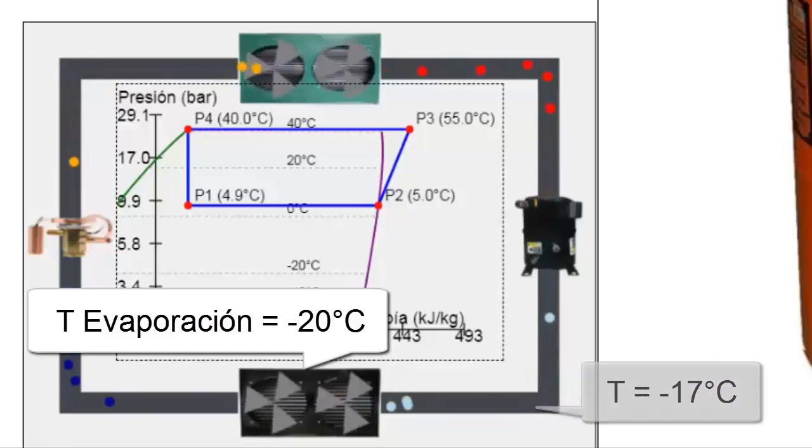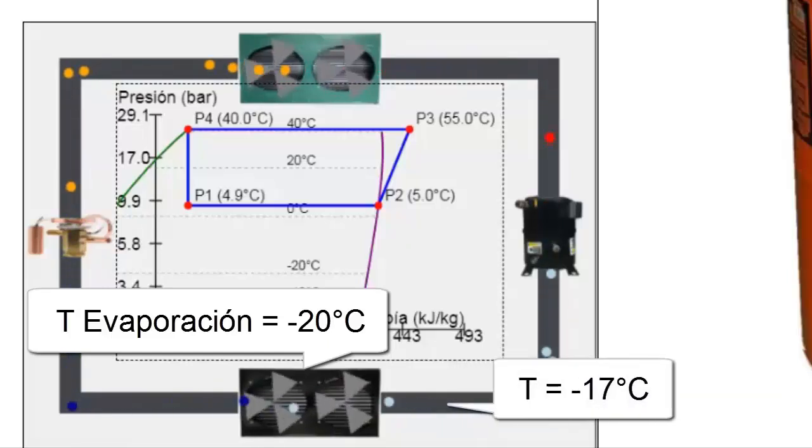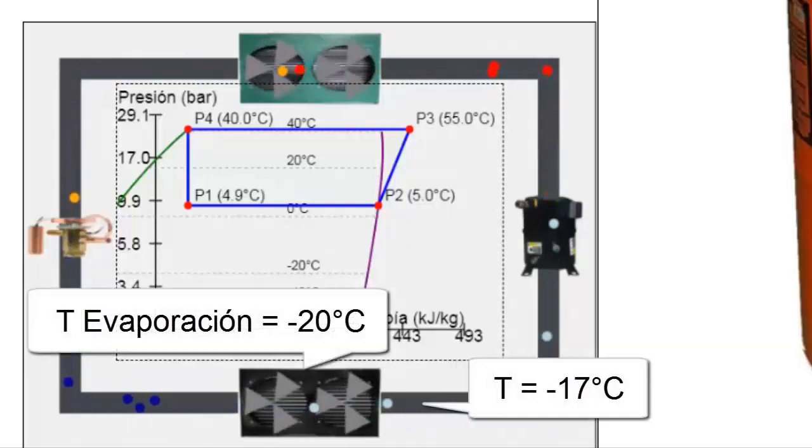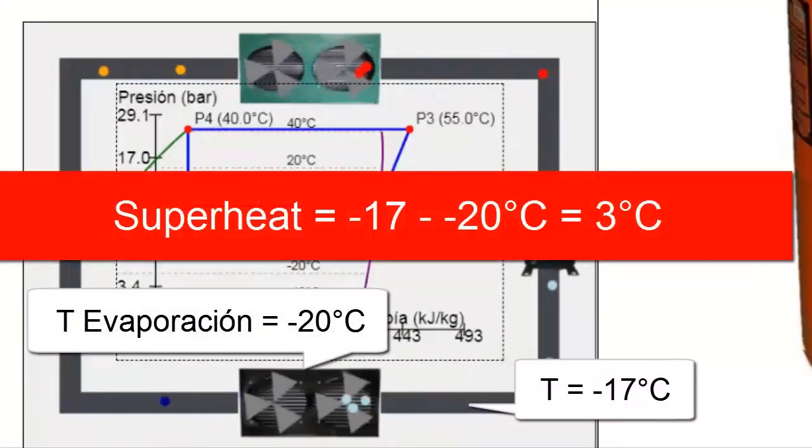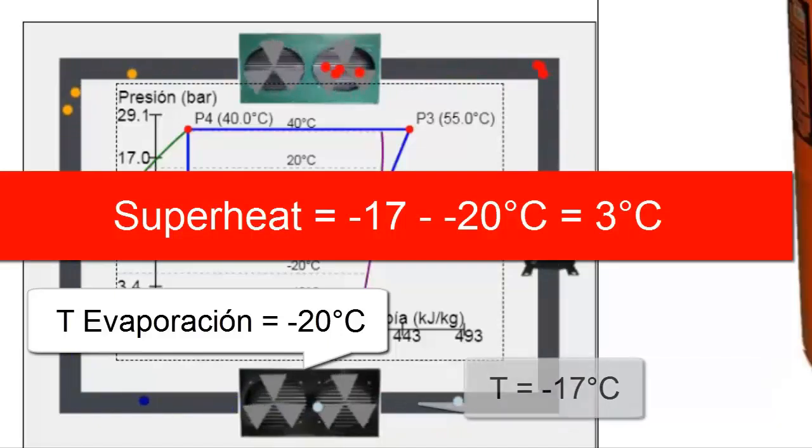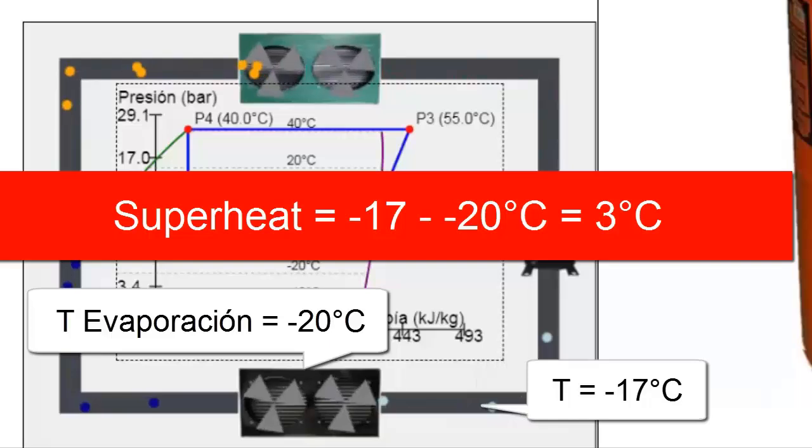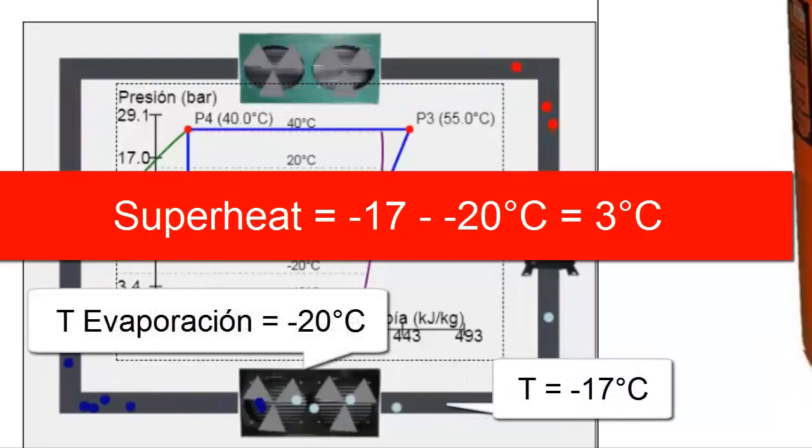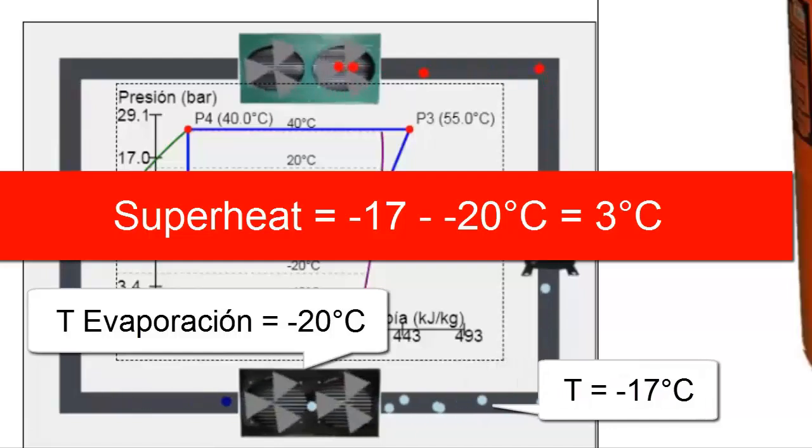The superheat value varies depending on the thermal load of the system. For example, in a freezer with a large quantity of food, the superheat can exceed 3 degrees Celsius, whereas with a lower thermal load, the superheat will be below 3 degrees Celsius, even reaching 0 degrees Celsius when the cooling load is very low.